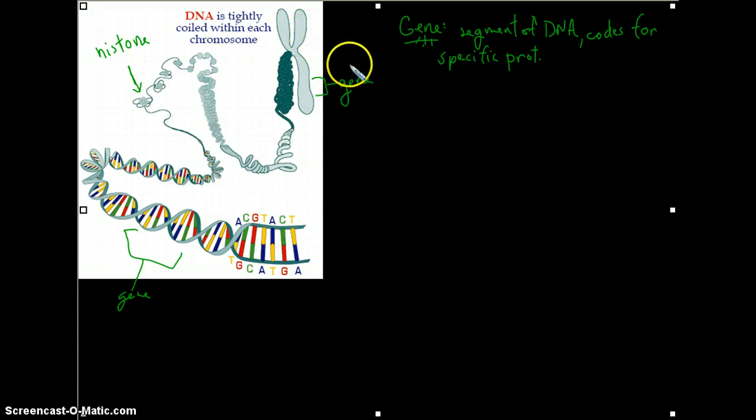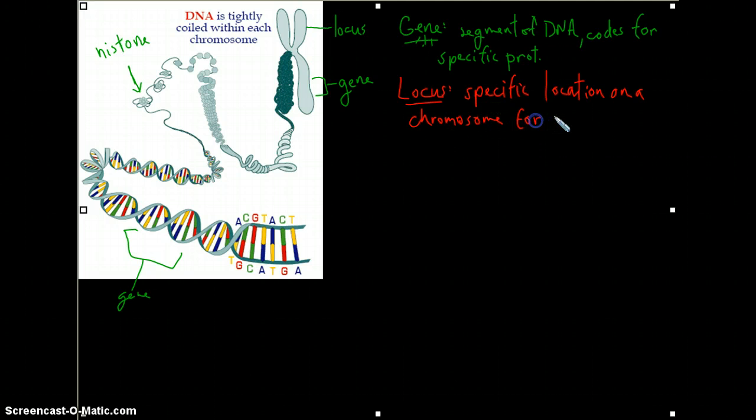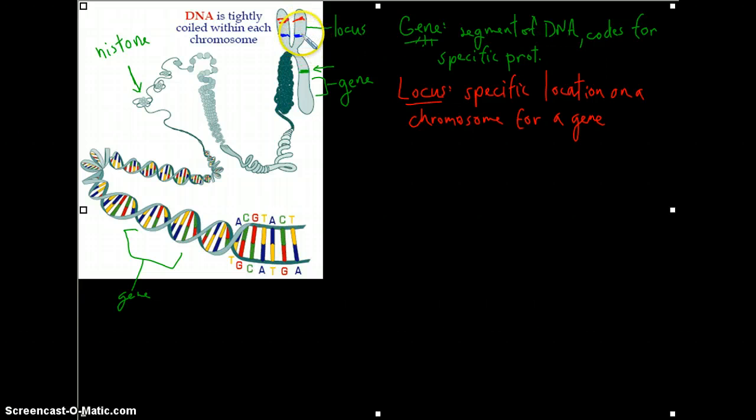Now the particular location of a gene is called its locus. Locus is the specific location on a chromosome for a gene. So you may have a gene for eye color located at one particular locus, an enzyme associated with the breakdown of sugars at another locus, or a third gene associated with some other protein located at a third locus. So again, when we refer to a locus, or loci for plural, we're talking about the location of that gene on the chromosome.